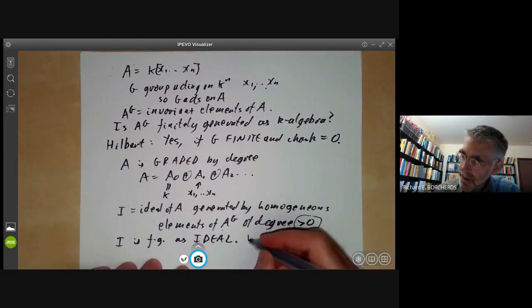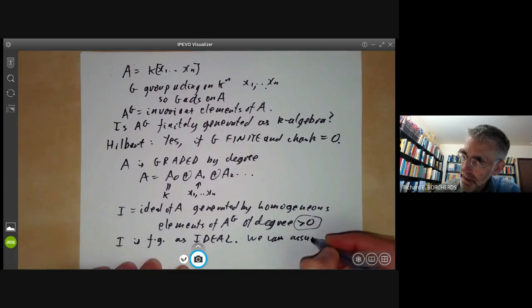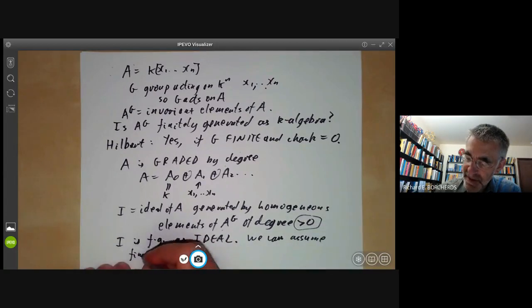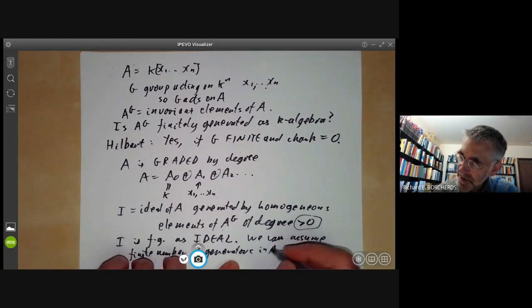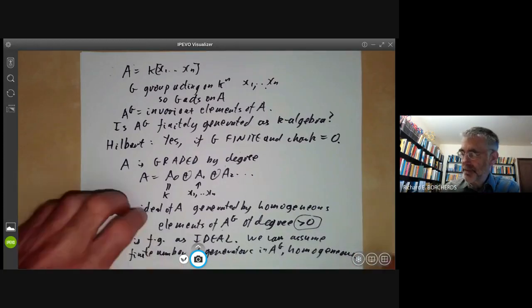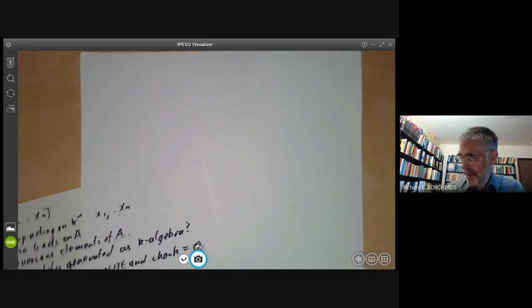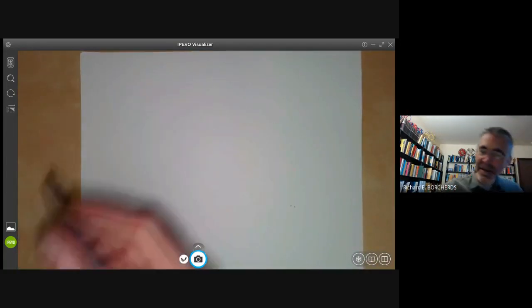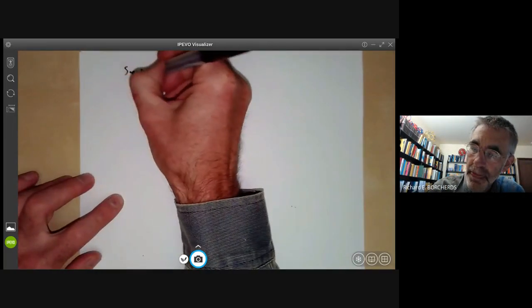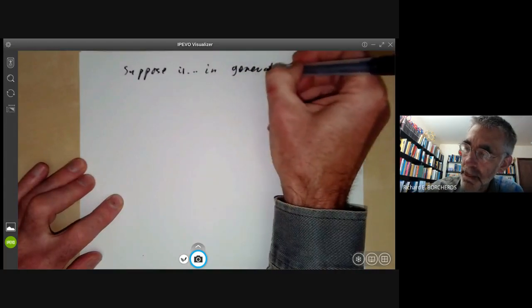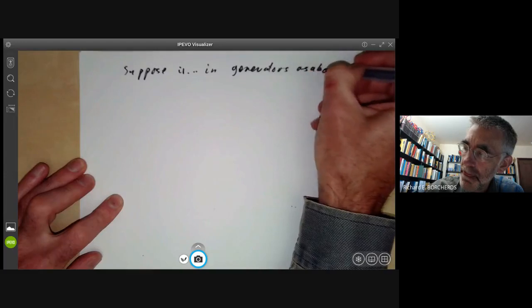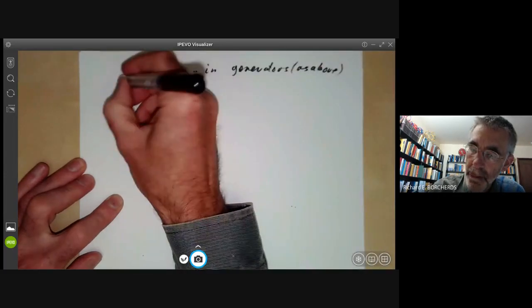Next, we notice that I is finitely generated as an ideal. And we can assume it has a finite number of generators. And we can assume these generators in A^G and are homogeneous. So we've got generators. So suppose i1 to in are generators as above for the ideal I.